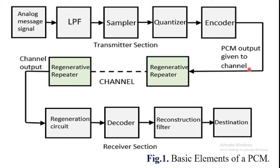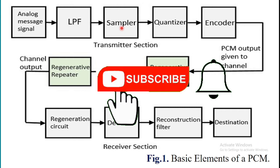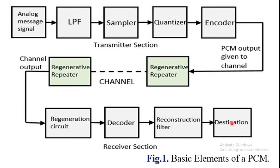This figure shows the basic elements of a PCM system and consists of three main parts: the transmitter section, the transmission part, and the receiver section.